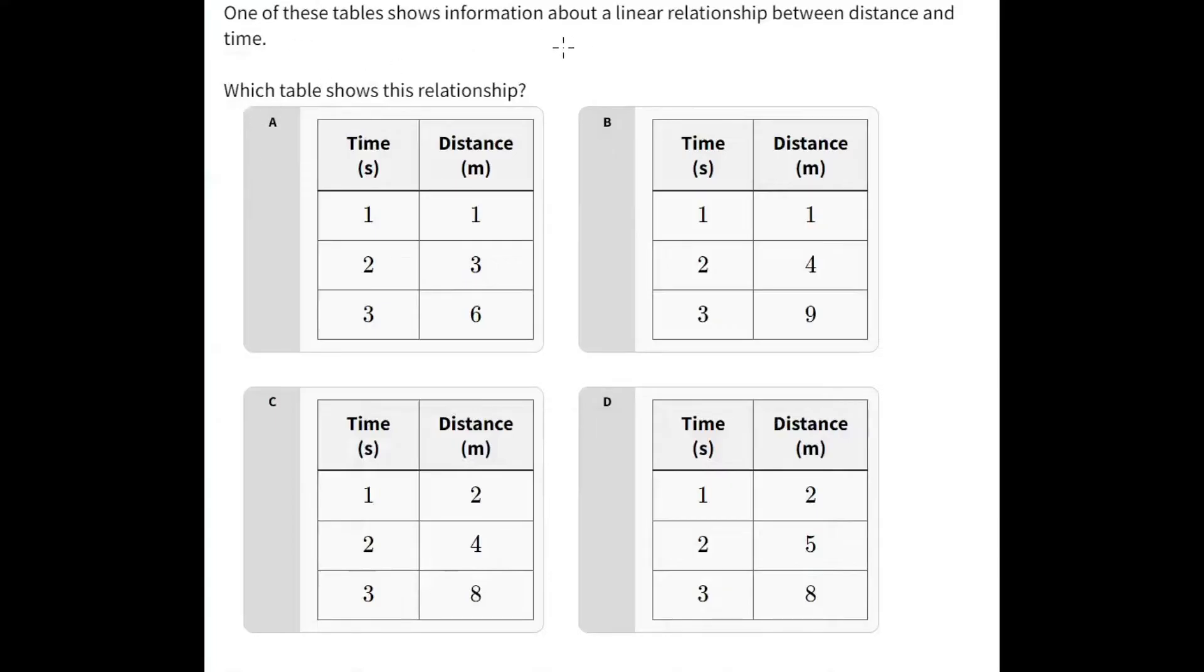So this question is asking one of these tables shows information about a linear relationship between distance and time. So we're looking for a linear relationship here. Let's look at our y values. For this table, it's going up by 2, and then it's going up by 3. So it's inconsistent. Therefore, it's not linear. This one's not linear, so it's not A. B is going up by plus 3, and then it's going up by plus 5. Again, this one's not linear because it's inconsistent.